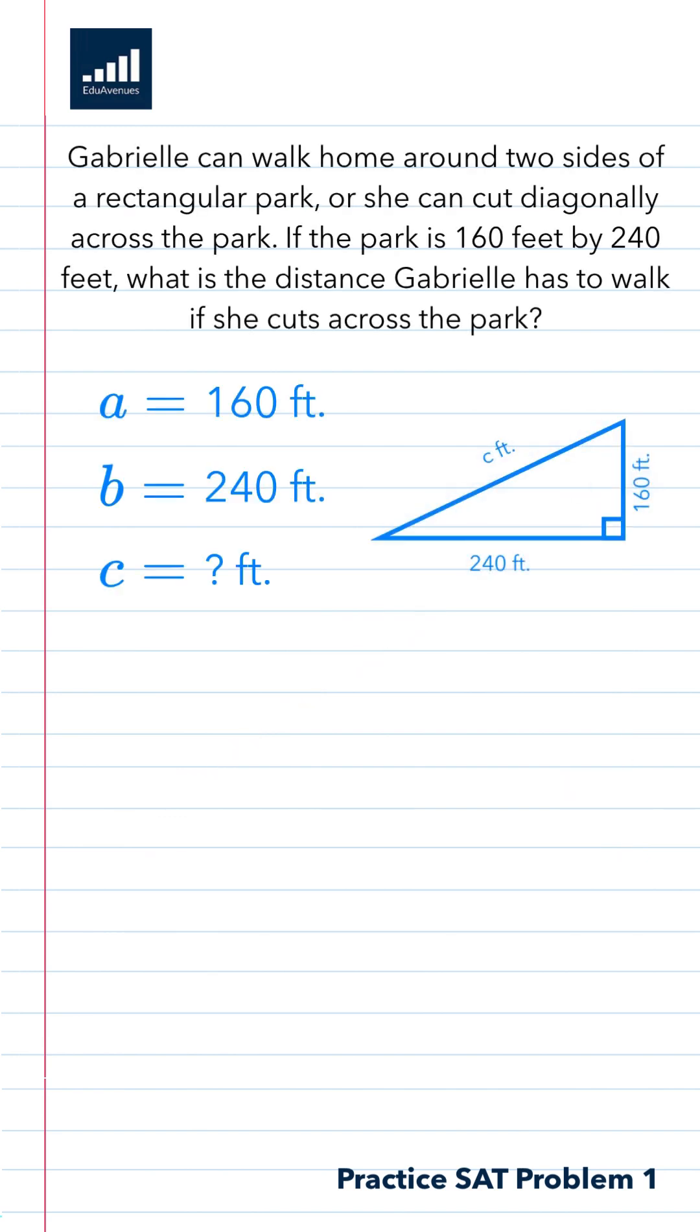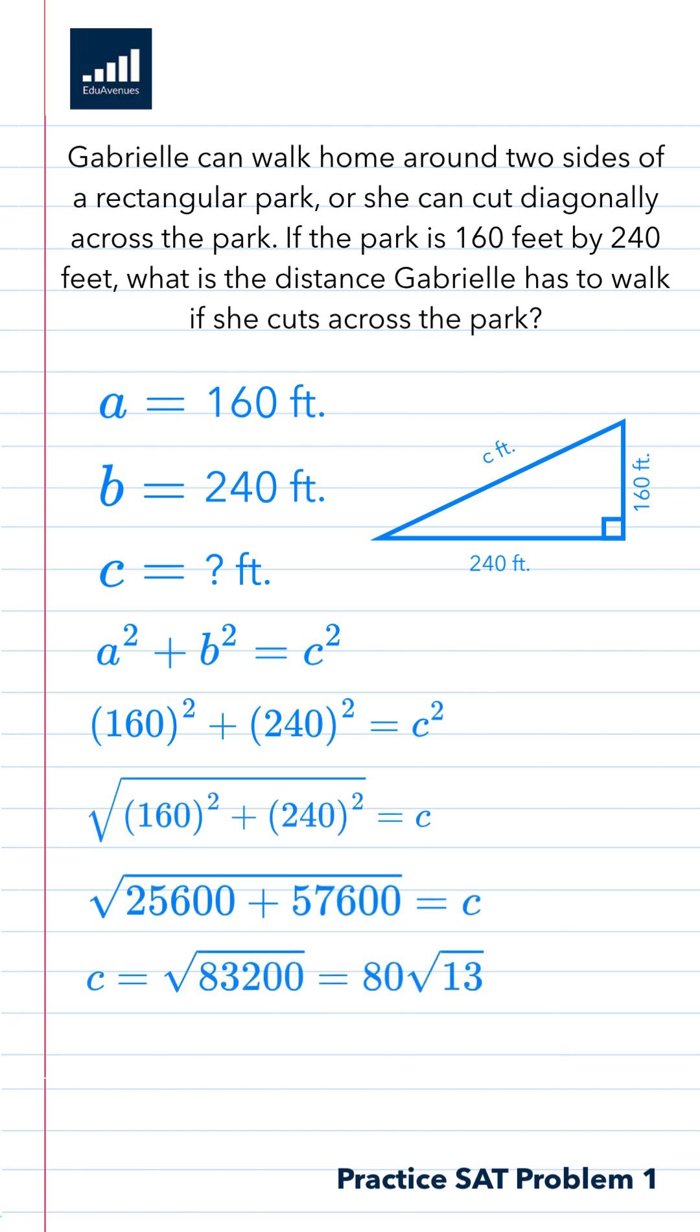Let's set a to 160, b to 240, and c to unknown. Now let's write the formula down: a squared plus b squared equals c squared. Now plug in all the values. Once we solve it out, we get that the exact answer is 80 root 13.